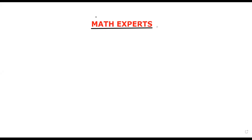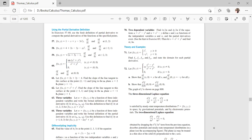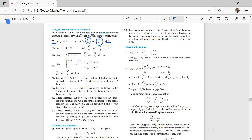First of all, I will share the question with you from Thomas Calculus, chapter number 14, question number 57. In exercises 57 to 60, we use the limit definition of partial derivatives to compute the partial derivatives of the functions at a specified point. The point given is (1, 2).